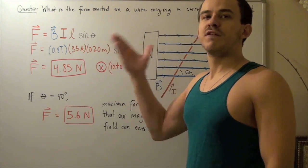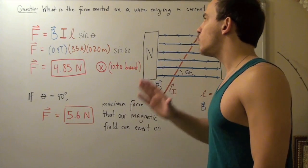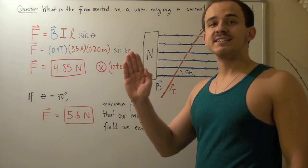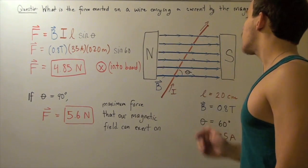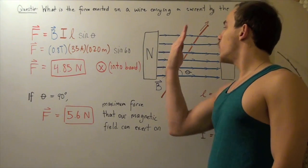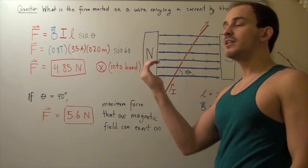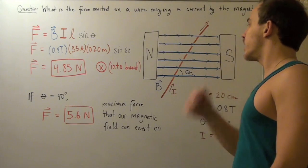Now, for the direction. How do you find our direction? Well, remember, we have to use the right-hand rule. So, we point our hand in the direction of our current, and our current is flowing this way. And then, we have to point our fingers in the direction of our magnetic field, which is going this way.